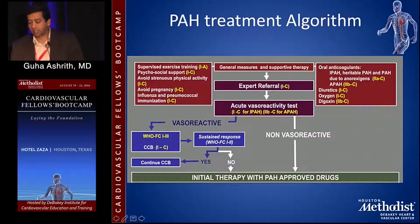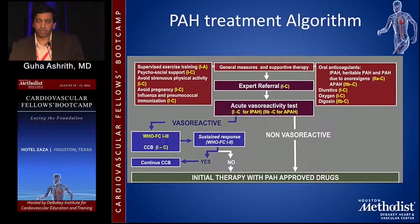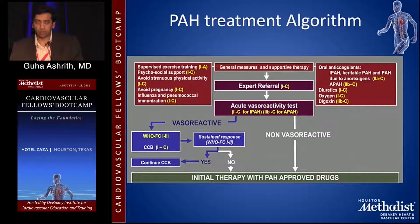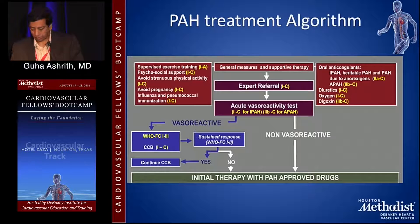Treatment choice really depends on the patient's presentation. If the patient presents with WHO functional class 2 or 3 symptoms without much RV failure, you start with oral therapies. If somebody presents with class 4 symptoms with bad RV failure and multiple hospitalizations, those are patients to consider for IV therapies. In pulmonary hypertension we use WHO class instead of NYHA class — it's very similar except for the addition of syncope and presyncope. Syncope places patients in class 4, and presyncope in class 3.